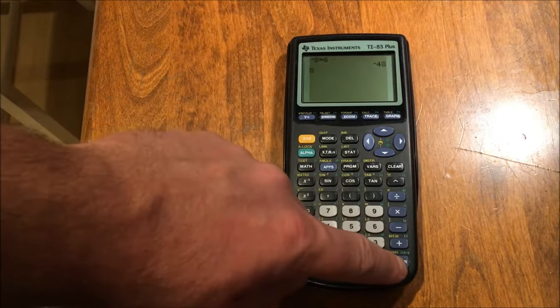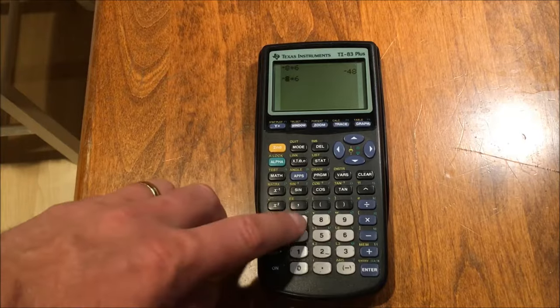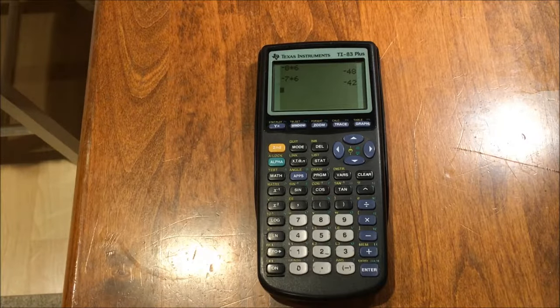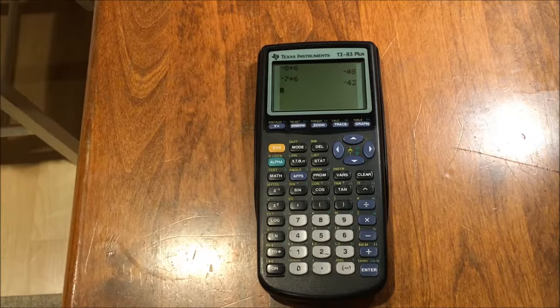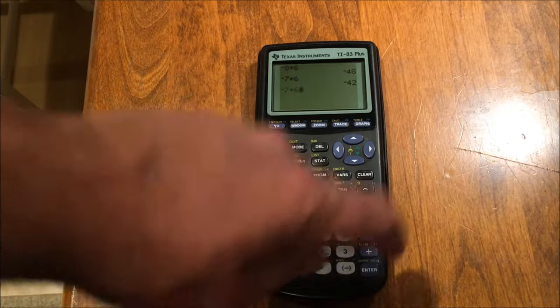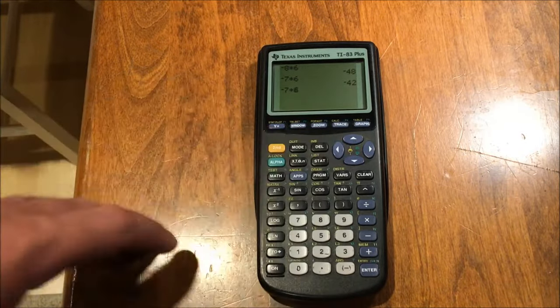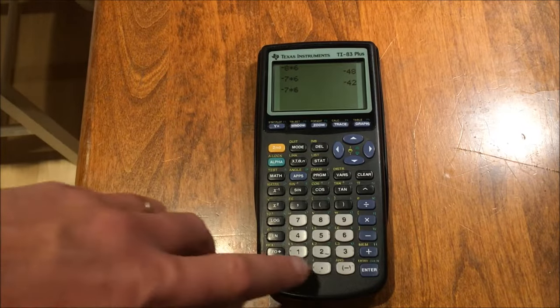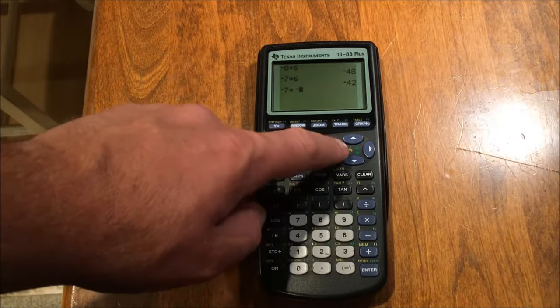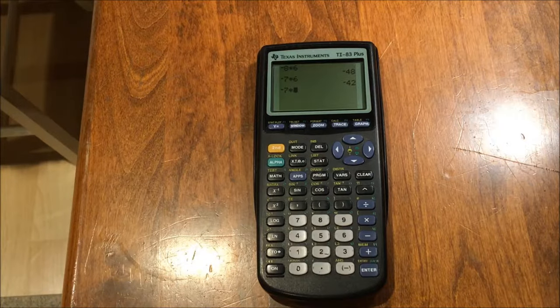So if I press second enter, I get my previous entry. And I can move the cursor over and edit what I need to edit. Now let's say instead of negative 7 times 6, I need another space to input my correct negative 6. There's two ways to do this. First, let's repopulate the screen with our editable expression. Now let's say we wanted to include a negative 6. You would move your cursor over the 6. You could type negative 6. That's one way to do it.